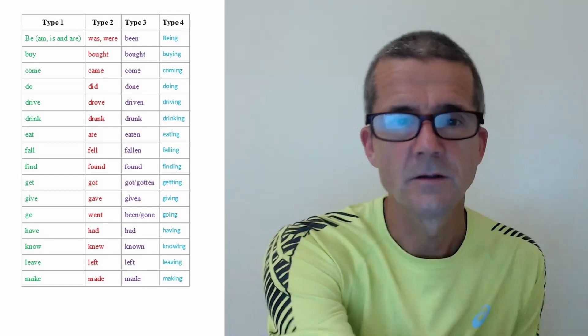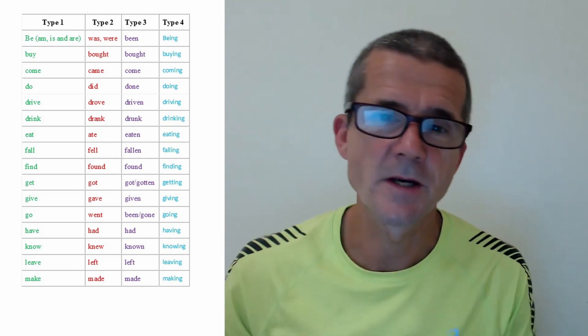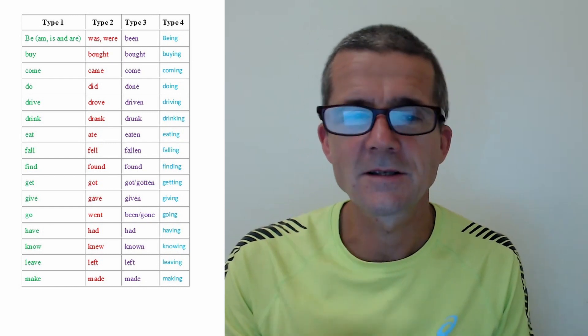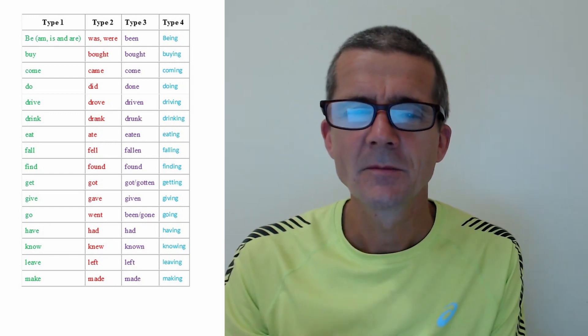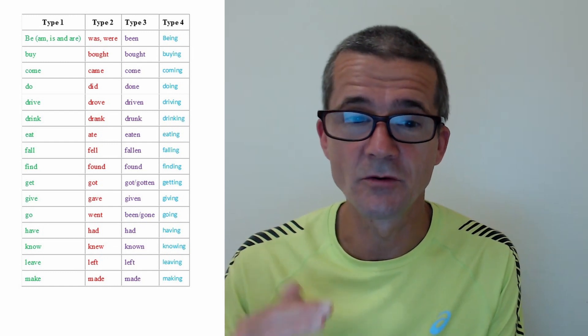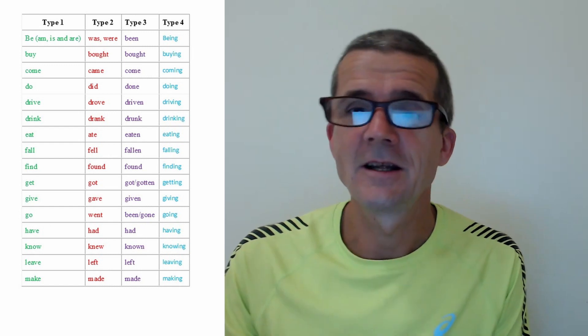For the second problem — 'did' in questions — a good practice could be something like this. You can see a verb table with four types. Look at the type ones. Ignore the first one, 'be,' because 'didn't be' is very rare. But buy, come, do, drive, drink, eat, find, get, etc. — all go with 'didn't.' We're going to flash a verb on the screen, then give you about ten seconds to come up with a question, and I'll give you one or two examples for each one.